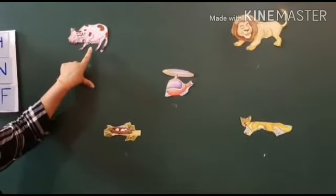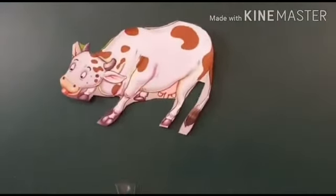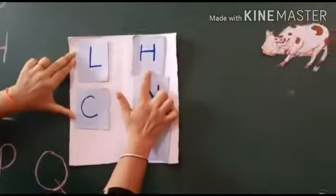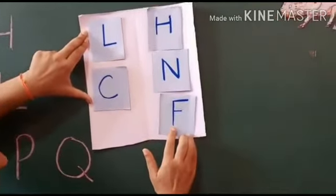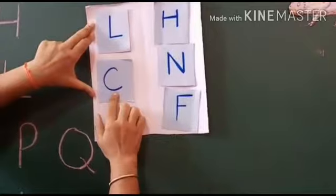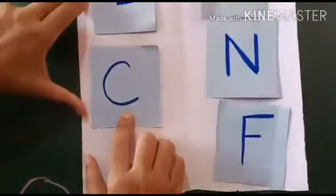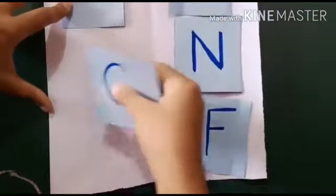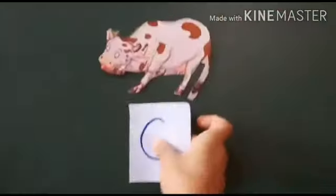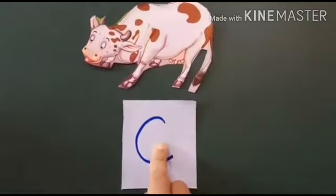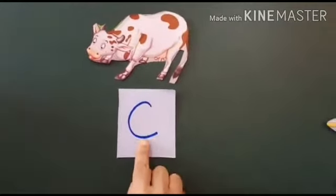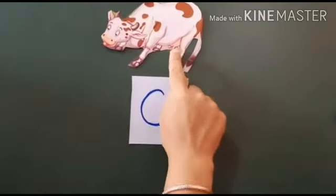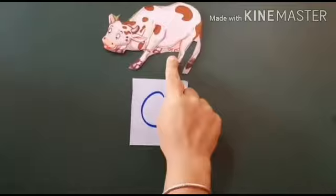Yes, cow. And where is letter C? Is this letter C? No. This? No. This? No. Yes, this is letter C. So we will take this C out. C says K. What's the sound of C? C says K, K, K, cow, K, cow.